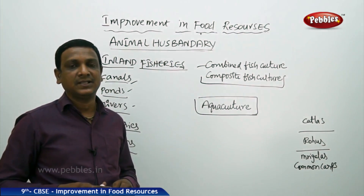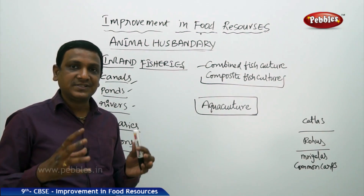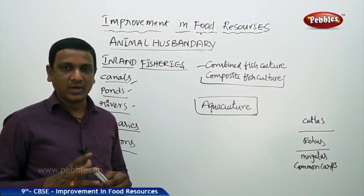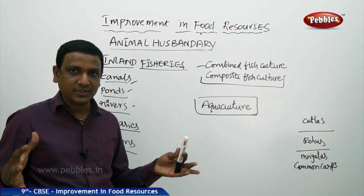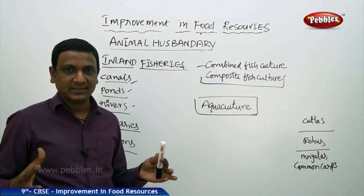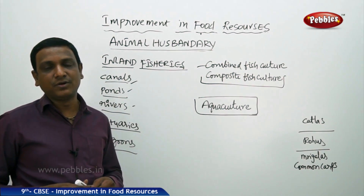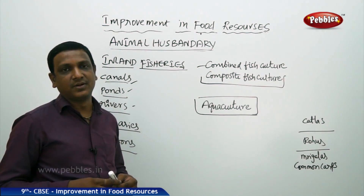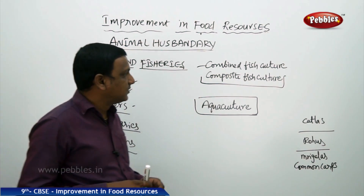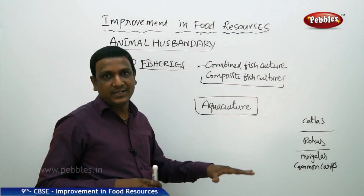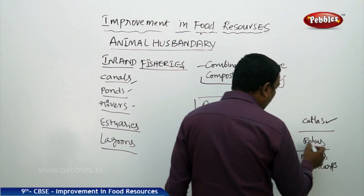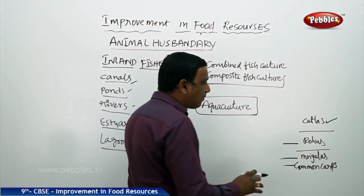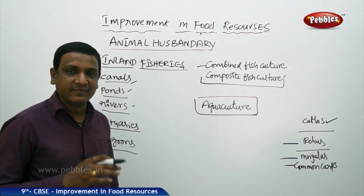In composite fish culture, up to six different varieties of fish are grown together, but the species selected must not compete with each other. The fish are chosen so they feed on different parts of the pond: katla are surface feeders, rohu are mid-zone feeders, mrigal and common carp are bottom feeders, and grass carp feed on weeds. By this, they do not interfere with each other's feeding habits and can all be harvested together.